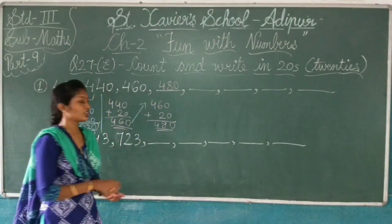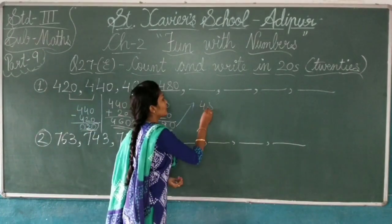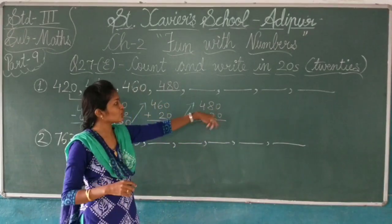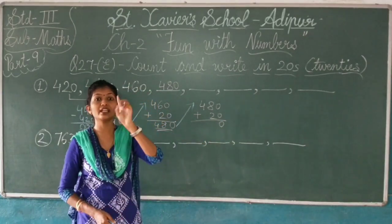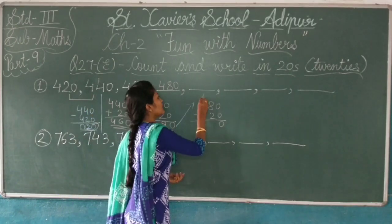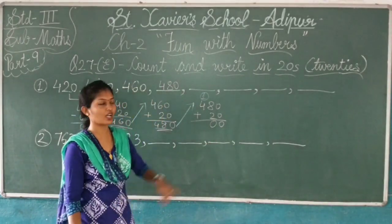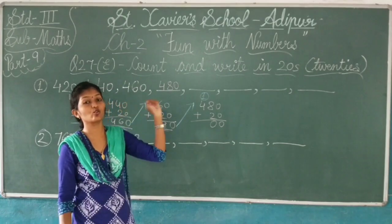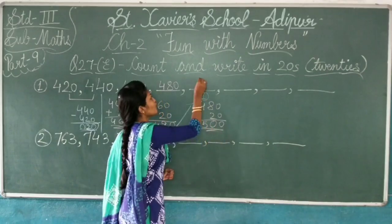So I will write here 480. Now I will take this 480 up. Now I will write here 480 plus 20. 0 plus 0 is 0, 8 plus 2 is 10. So 0 down and 1 up. Now 4 plus 1 is 5. So what is the answer? 500.